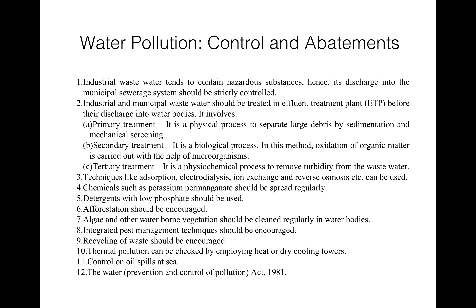Control and abatements: industrial wastewater has many hazardous substances, so if it is discharged into the municipal civil system it will affect the whole water ecosystem. There must be strict regulation for industrial effluents; they must not discharge highly toxic water into water bodies. Industrial and municipal wastewater should be treated in an Effluent Treatment Plant (ETP) before being discharged into water bodies.